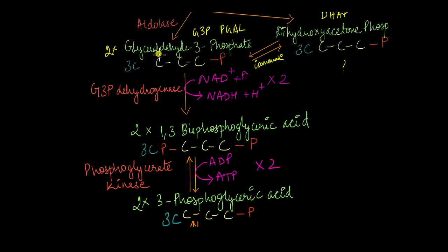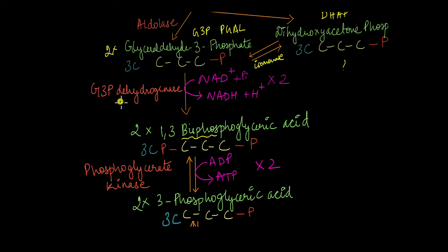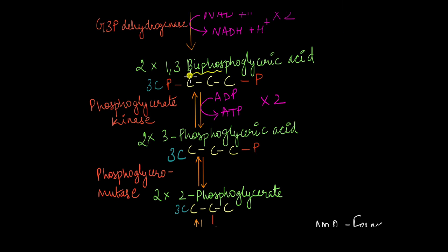The two molecules of glyceraldehyde-3-phosphate are converted to two molecules of 1,3-bisphosphoglyceric acid. In this process, NAD+ and inorganic phosphate react, NADH is produced, and the inorganic phosphate is added to G3P producing 1,3-bisphosphoglyceric acid. This entire process is catalyzed by G3P dehydrogenase. So from two molecules of G3P, two molecules of NADH and two molecules of 1,3-bisphosphoglyceric acid are produced. This 3-carbon molecule now has two phosphate groups.